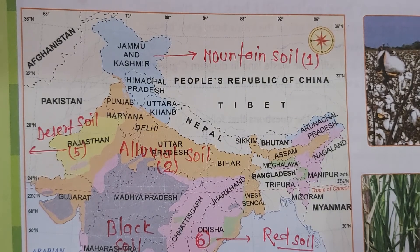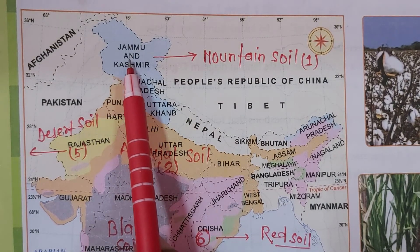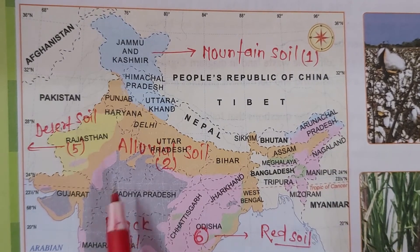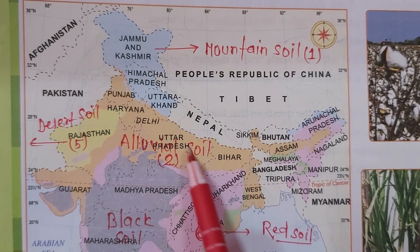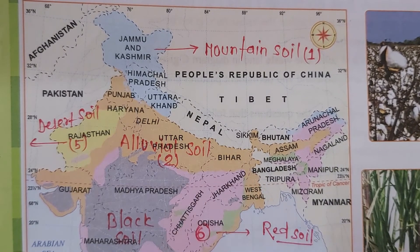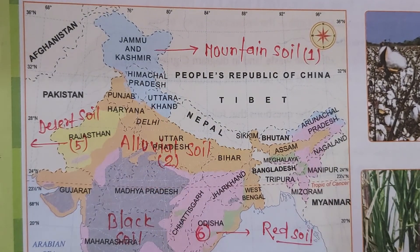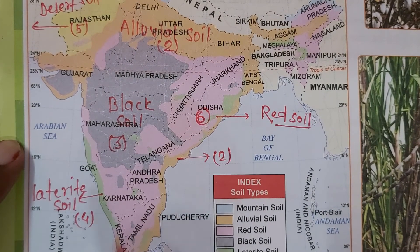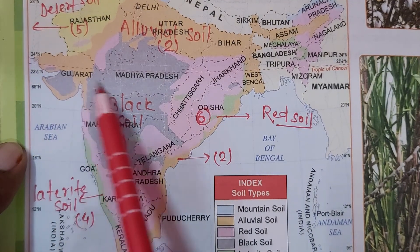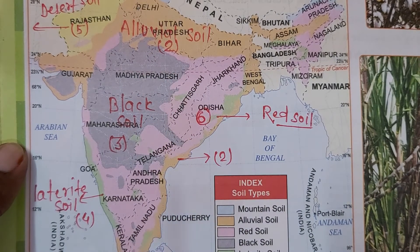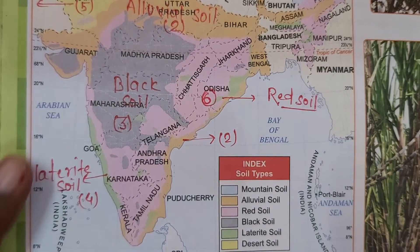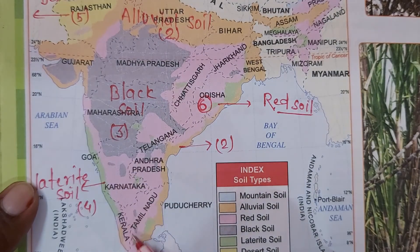Now let's look at all the points we discussed on a map to identify them. On this map, the top area — Jammu and Kashmir, Himachal Pradesh, Uttarakhand, and the eastern parts — shows mountainous soil, marked as number one. Number two is the large patch covering the northern plains up to Assam, which is alluvial soil formed due to the interplay of three major rivers: Indus, Ganga, and Brahmaputra. Number three is the black soil area, also called regur soil, where volcanic activity is more prevalent.